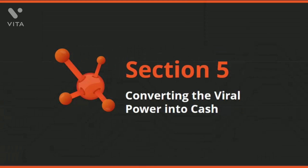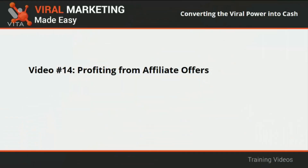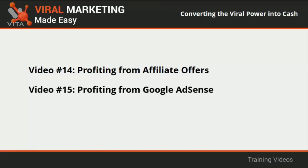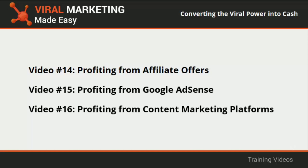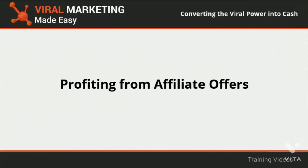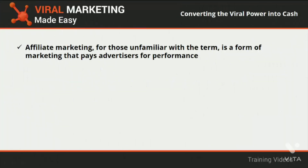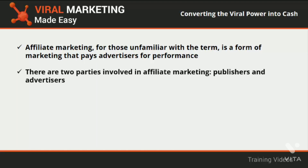Welcome to section 5 of our viral marketing video training. In this section we'll talk about profiting from affiliate offers, profiting from Google AdSense, and profiting from content marketing platforms. Affiliate marketing is a form of marketing that pays advertisers for performance — in this case, performance refers to when an advertiser drives customers through a sales funnel to make a purchase from a vendor. There are two parties involved in affiliate marketing: publishers and advertisers.